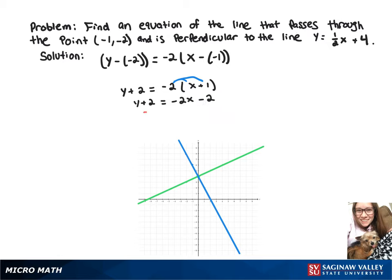Now we can subtract 2 from both sides, which gives us our equation y equals negative 2x minus 4.